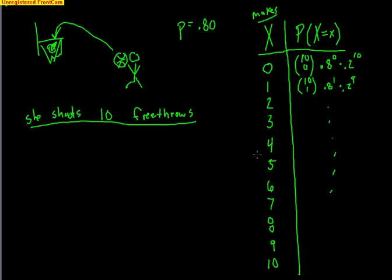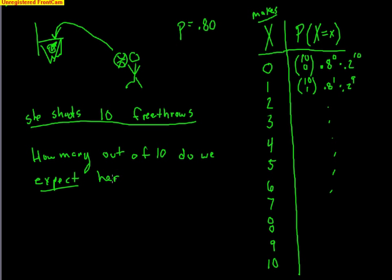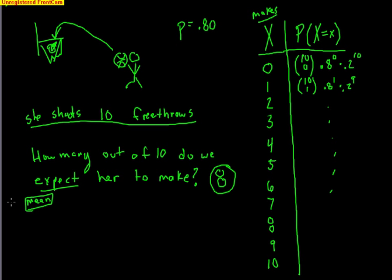The key question is: how many out of 10 do we expect her to make? If she shoots 80%, she should make 8 — that's simple. 80% of 10 is 8. You can think of the word 'expect' as like a mean or average. Is the average guaranteed to happen? No, it's just what we expect.